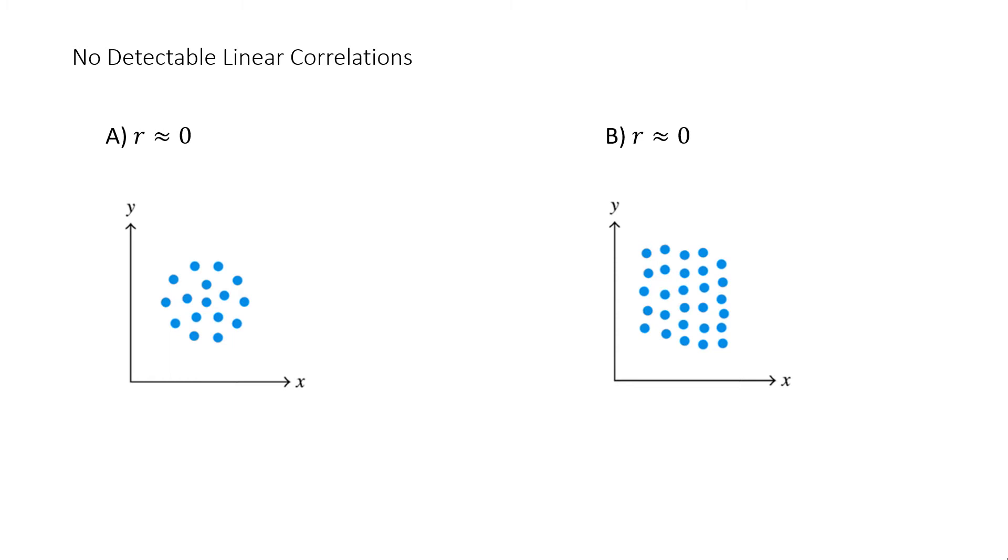Here are graphics of no detectable linear correlations. The scatter plot graphic of part A appears to form an almost perfect disk. And the scatter plot graphic of part B appears to form like a quadrilateral. Again, no detectable linear correlation.